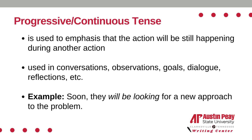The progressive verb tense emphasizes that the action is currently happening, or was or will be continuously happening at the same time as something else. It is most used in conversations, observations, goals, dialogue, reflections, and more.